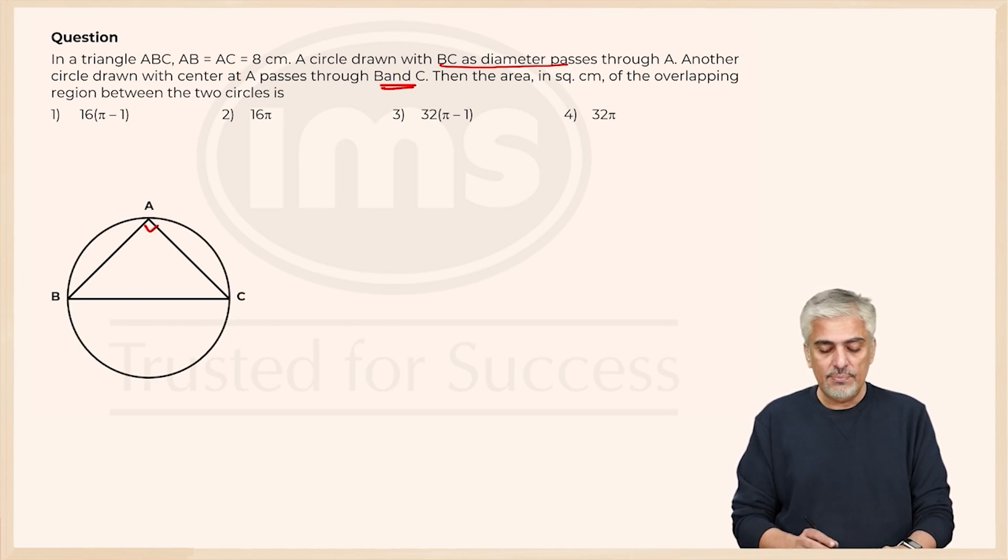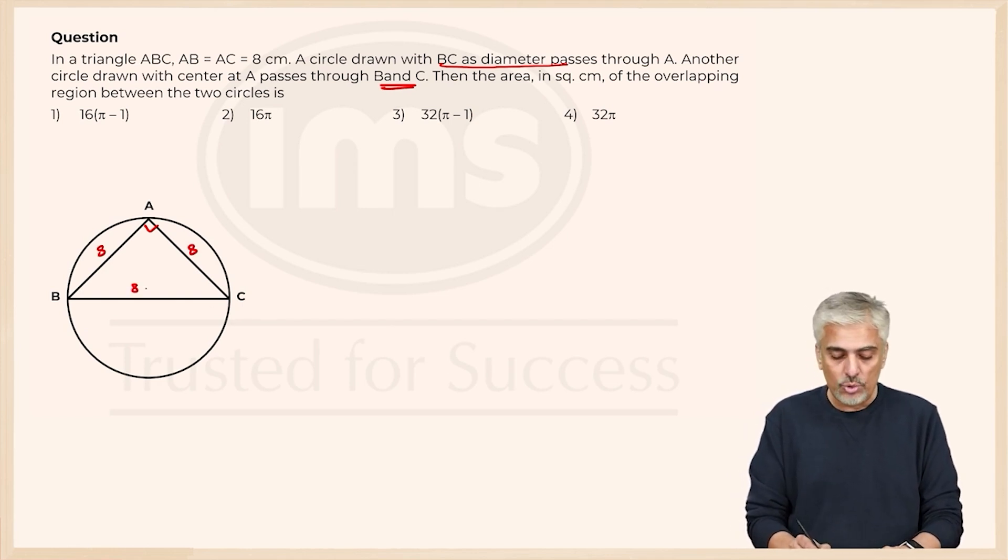This is the first circle BC as diameter. They have told us this is 8 and this is 8. So finding BC is very simple, it will be 8 root 2.